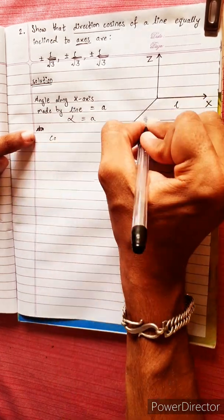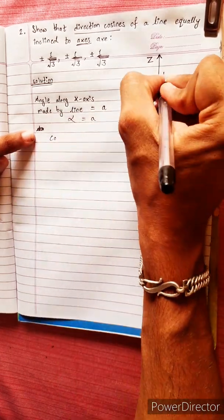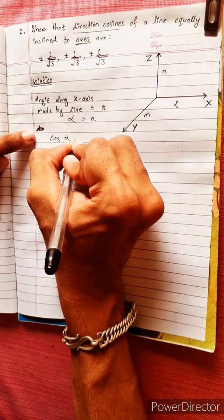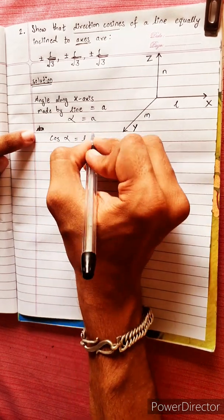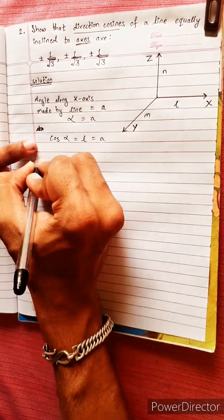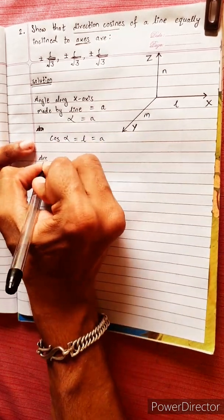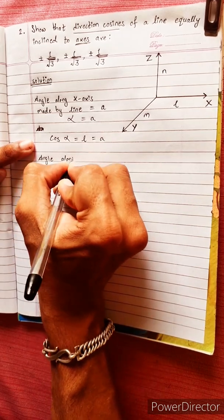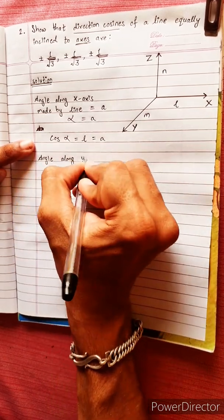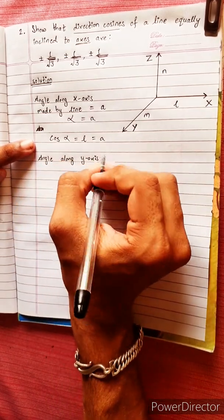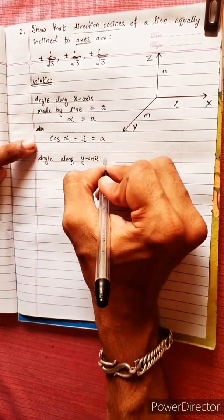So L, M, N are the direction cosines. Cos alpha equals L. Now the angle along the y-axis made by the line.